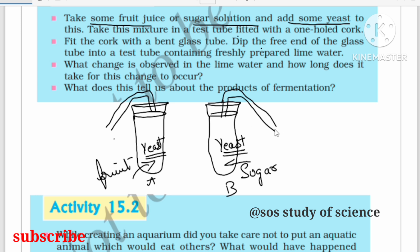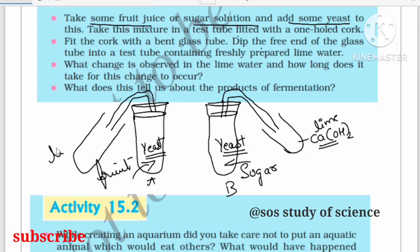Place the bent delivery tube so that it is directed towards a test tube containing lime water (calcium hydroxide solution). After setting up, wait for some time and observe what changes occur in the lime water and how long it takes for those changes to occur.